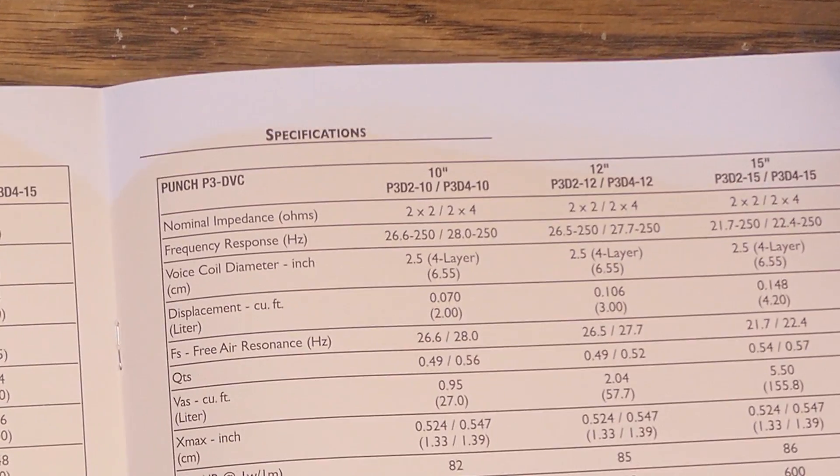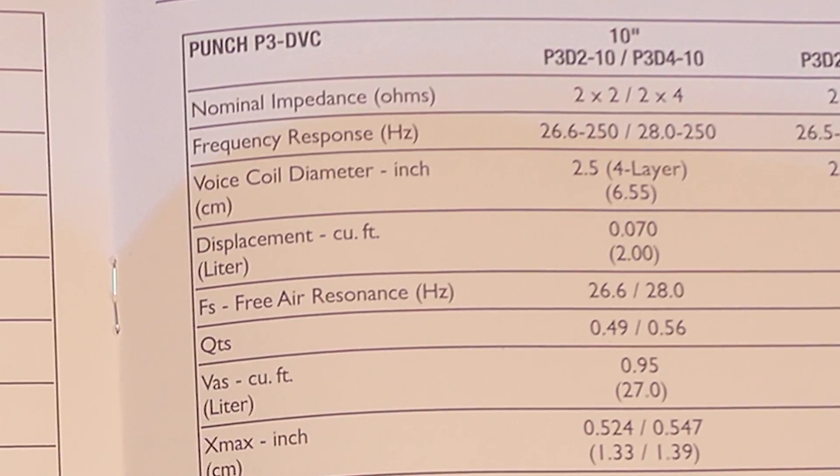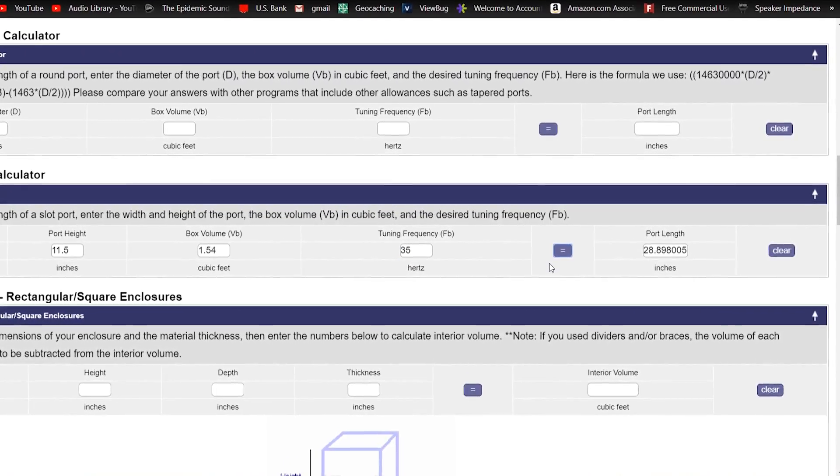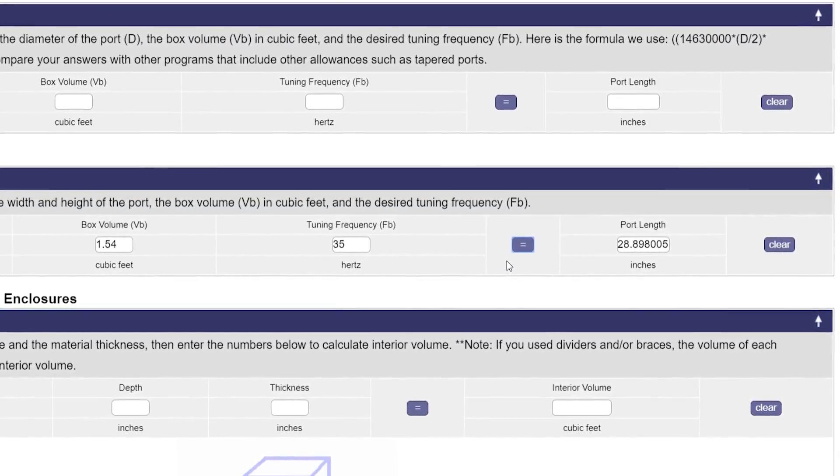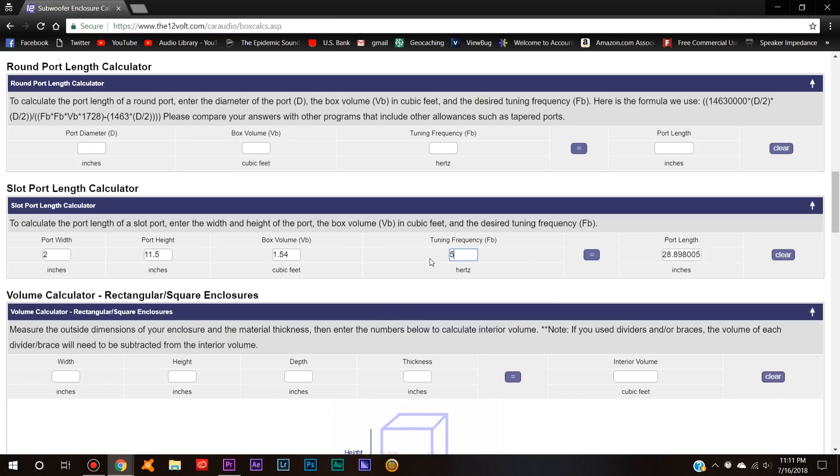Also, one thing to look at is the sub FS. This is when the subwoofer hits its resonant frequency, so there would usually be no point to tune the box below this. So, if I round up, we get a port length of about 29 inches. Rounding to a whole number will make it more simple, and will only affect the tuning frequency by a small amount. A higher tuning frequency will give us a shorter port length, and a lower frequency will give us a longer one. And, of course, all the other parameters will have an impact on this as well. We could get a shorter length if we make the port thinner, but too thin and it might cause some unwanted port noise.